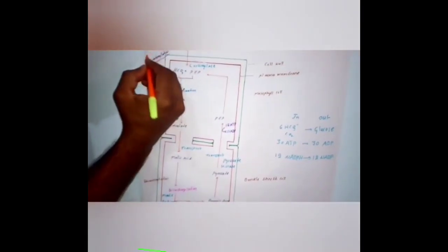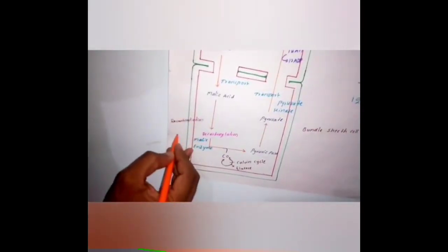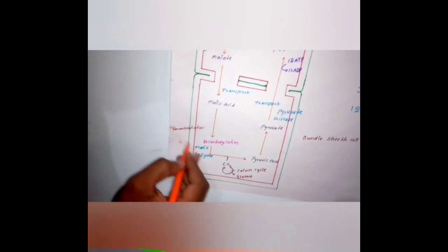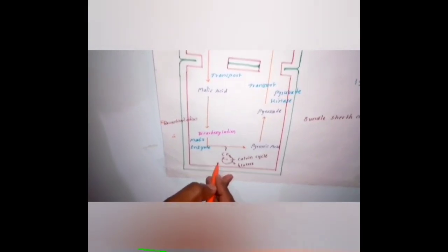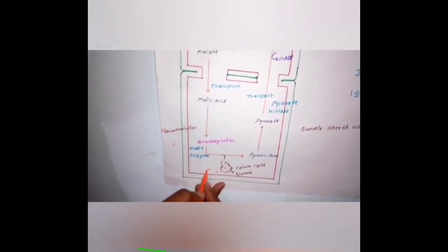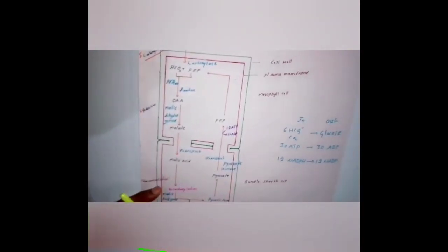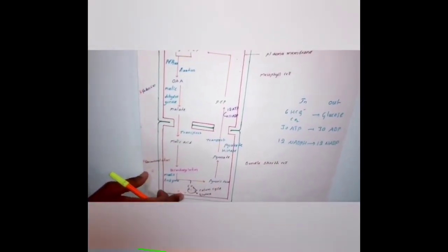The first stage of this dark reaction is carboxylation, the second step is reduction, and the third step is decarboxylation. After decarboxylation, again the process of carboxylation, reduction, and regeneration goes on. In this process there are two carboxylation processes, two reduction processes, one decarboxylation process, and one regeneration process.